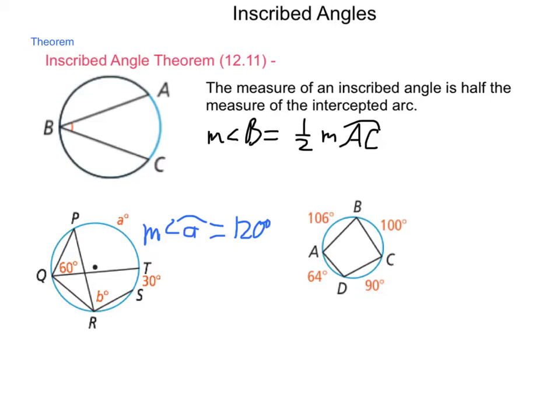Then, using that, along with the 30 degrees that's given here for arc TS, angle B intercepts both of those. So, 120 plus 30 is 150. Measure of angle B is going to be half of that 150. So, the measure of angle B is 75 degrees.